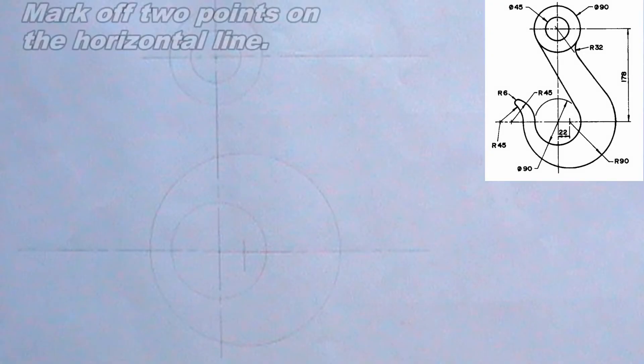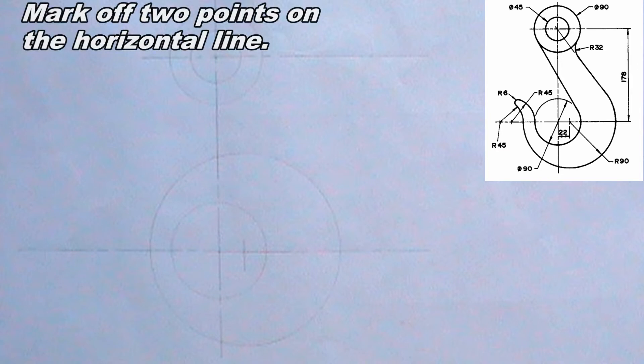I will mark off two points on the horizontal line. One of the points should be 22.5 mm from the smaller bottom circle and the other 22.5 mm from the bigger bottom circle.